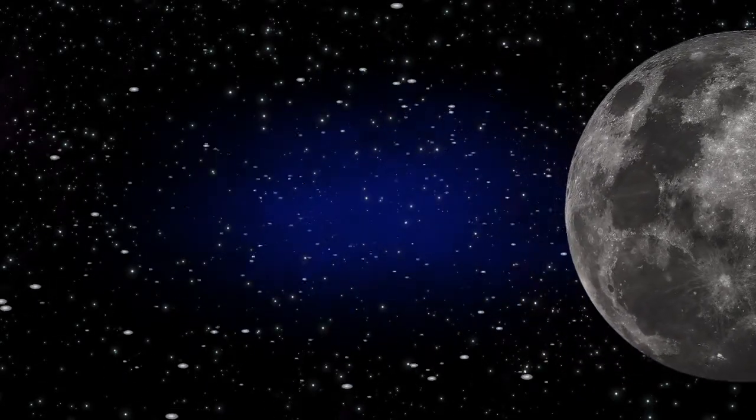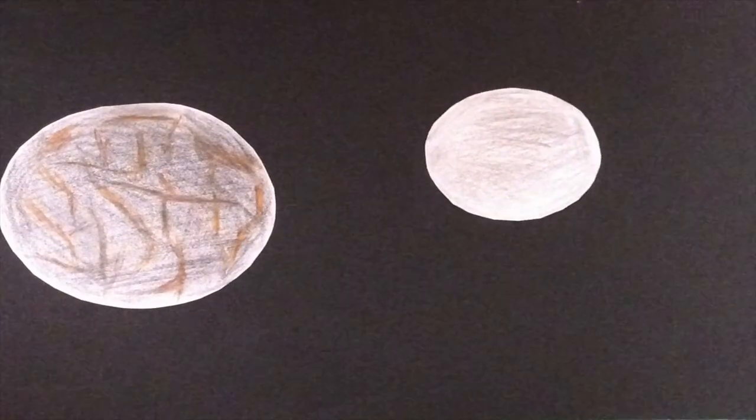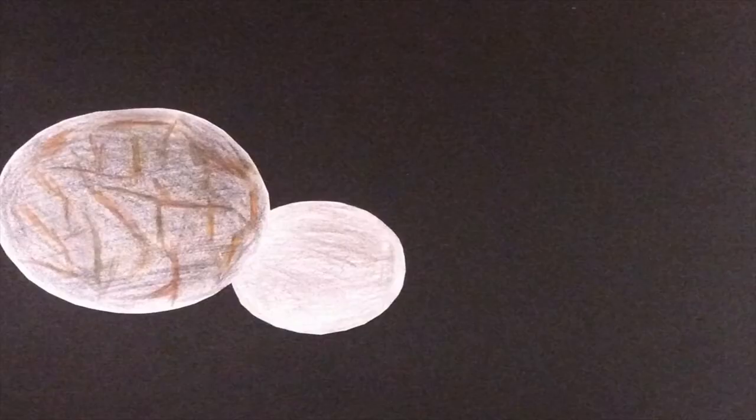About 4.5 billion years ago, a small developing planet the size of Mars crashed into the Earth. This planet, known as Theia, sideswiped the Earth rather than came in head-on, which resulted in it being broken up as it hit the Earth.